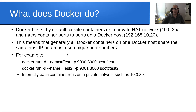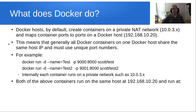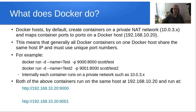Internally, each container runs on a private network such as the 10.0.3 network pointed out earlier. Both containers run on the same host, which in this example is 192.168.10.20. The URL of the first application would be that address colon port 9000, and the second application would be that same address at port 9001.